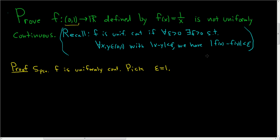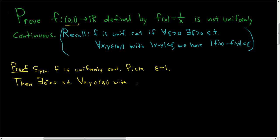The goal is to find two numbers x and y such that the distance between x and y is smaller than delta, but the distance between f(x) and f(y) is not less than 1. So pick epsilon equals 1, and because f is uniformly continuous, there exists a delta greater than 0 such that for all x, y in the open interval (0, 1), with |x − y| less than delta, we have |1/x − 1/y| less than 1.